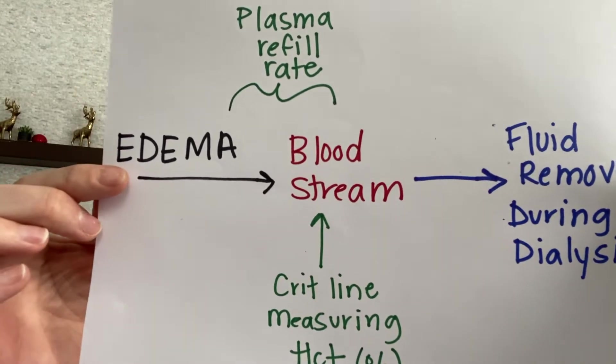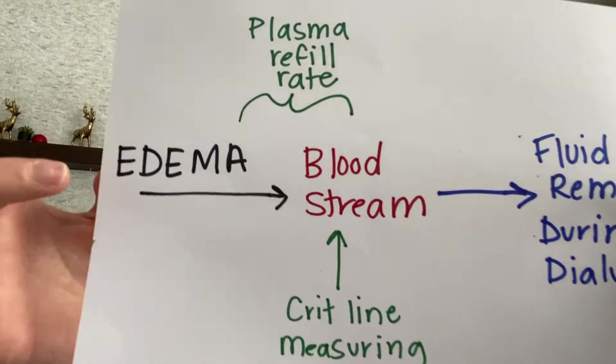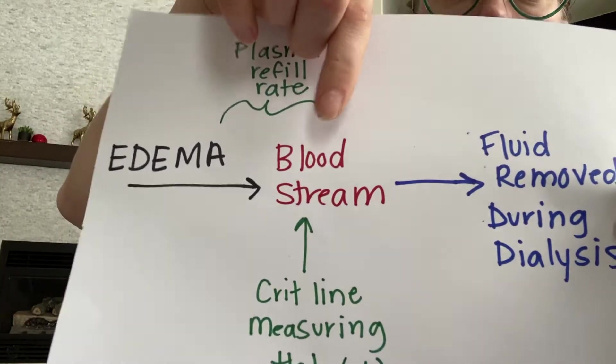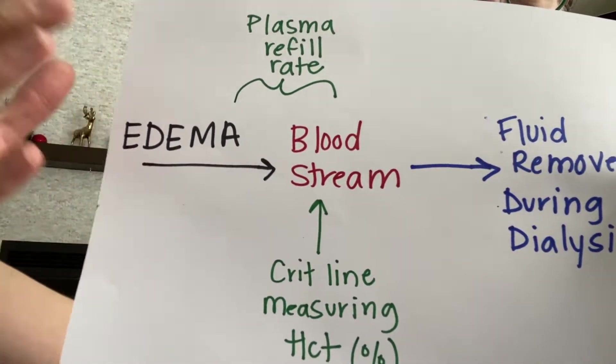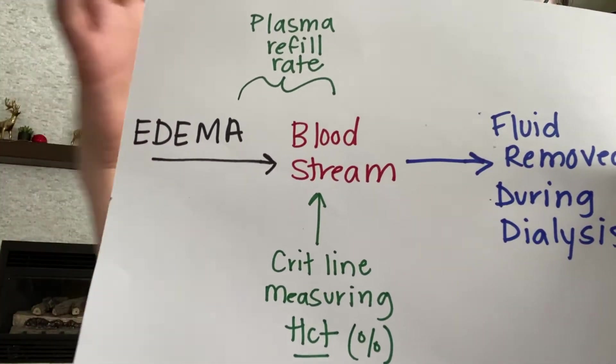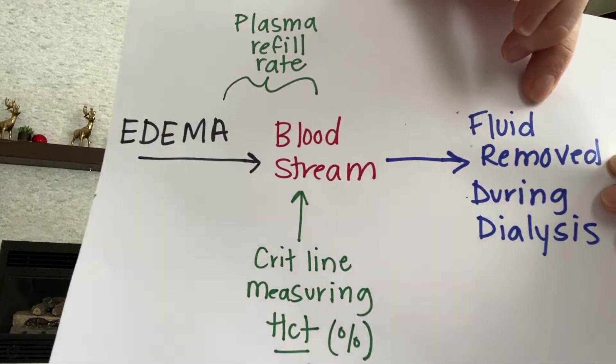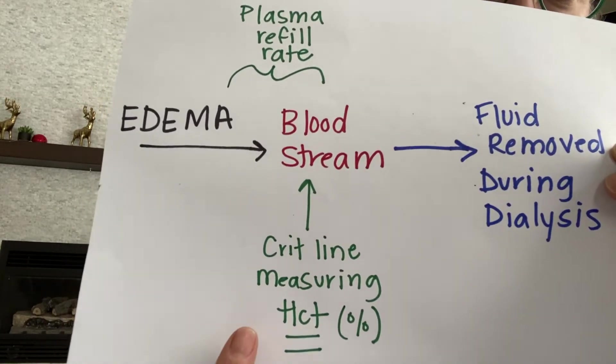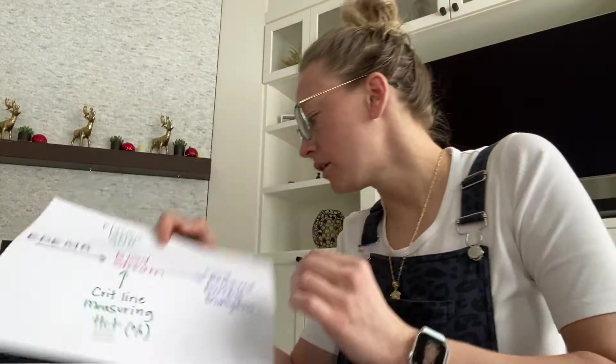The body's natural response is to start doing something called plasma refill or the plasma refill rate. As we're removing fluid from the bloodstream, in order to maintain blood pressure, the body's edema, their third spacing, their extra fluid is going to move from outside the bloodstream into the bloodstream. And then we're going to take it again. The crit line is measuring the percent of blood volume.